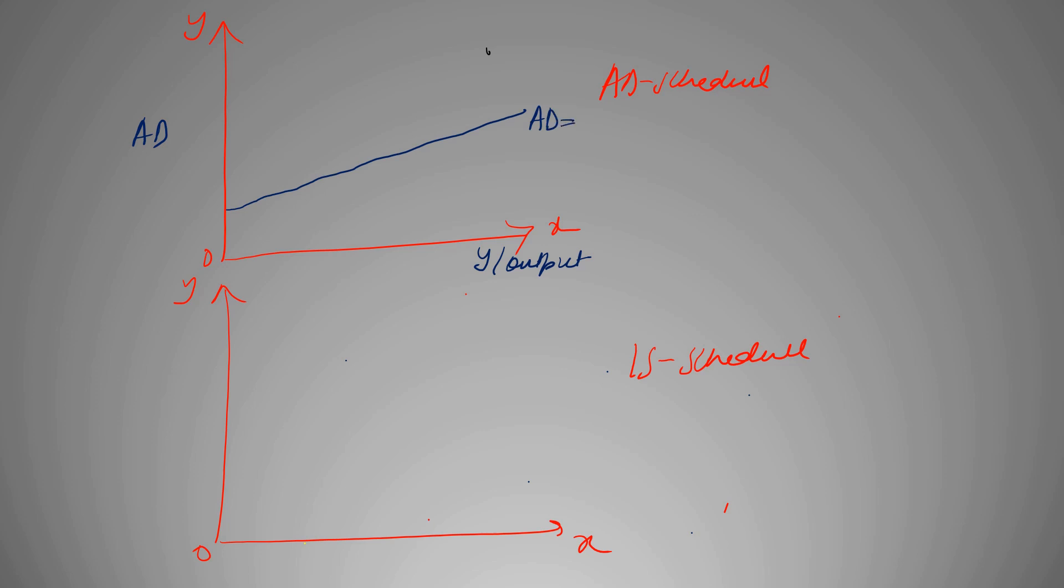Let's say that AD is equal to A plus C(1-T)Y minus BI1 - this is the first interest rate. Then we have another AD curve which is AD equals A plus C(1-T)Y minus BI2. This is our another interest rate. Important to note that I1 is greater than I2.